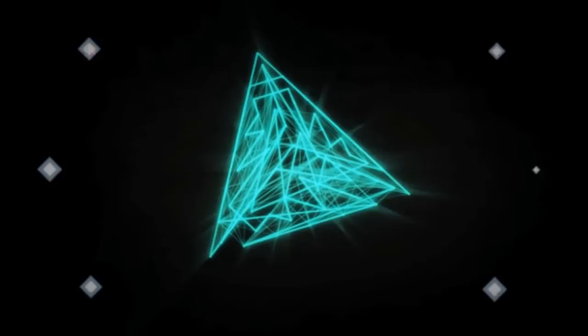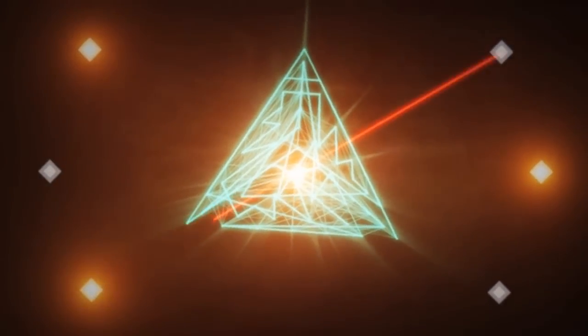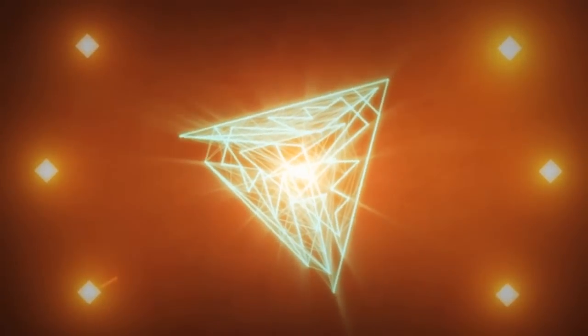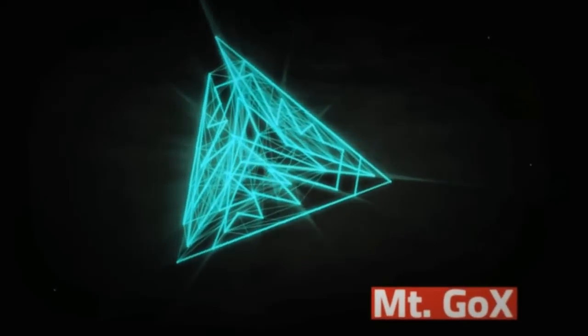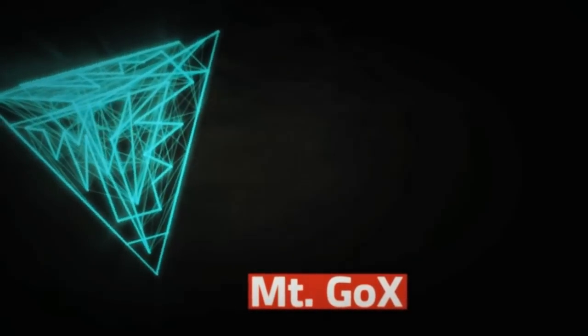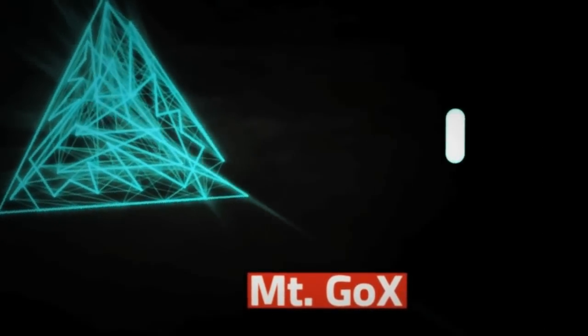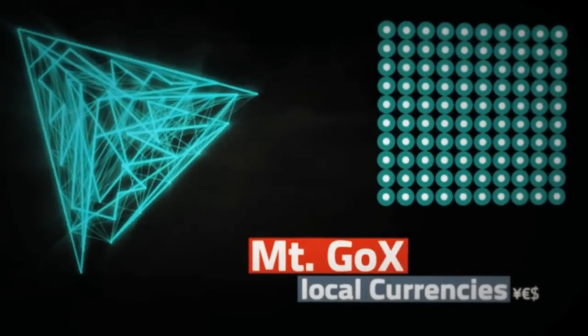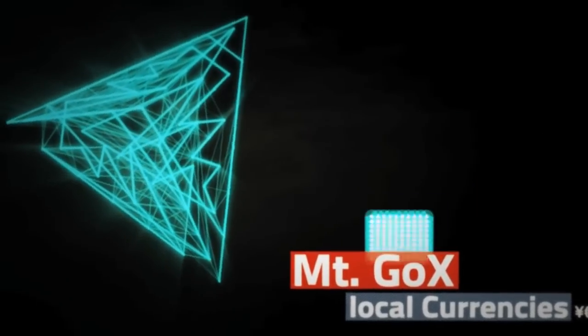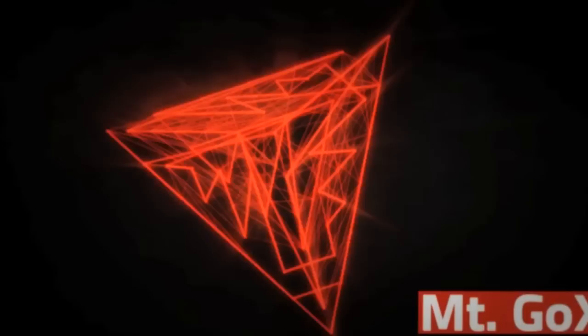The Rothschilds control the Bank of England, the Federal Reserve, the European Central Bank, the IMF, the World Bank and the Bank of International Settlements. Also, they own most of the gold in the world as well as the London Gold Exchange, which sets the price of gold every day.